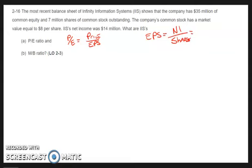The net income is $14 million, $7 million shares outstanding. So our earnings per share is $2. We know that our price is $8.